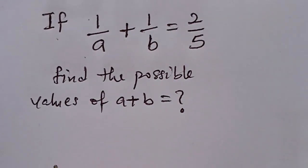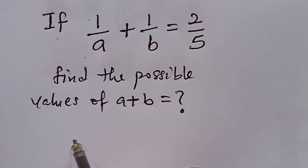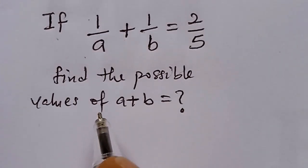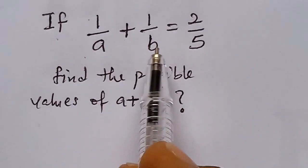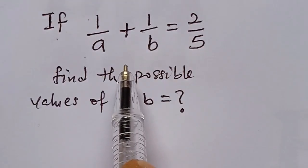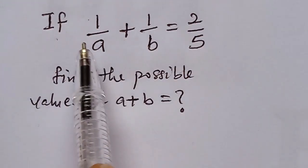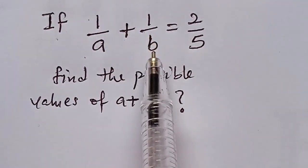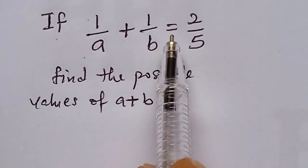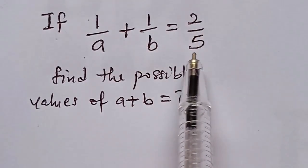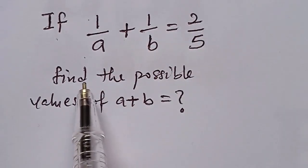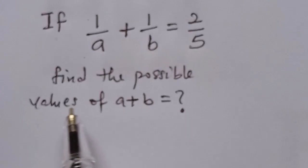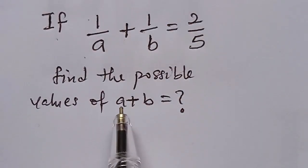Hi everyone, welcome to another interesting lesson. In today's lesson, we are going to solve this algebraic expression, this Olympiad math. We have: if 1 over a plus 1 over b is equal to 2 over 5, find the possible values of a plus b.